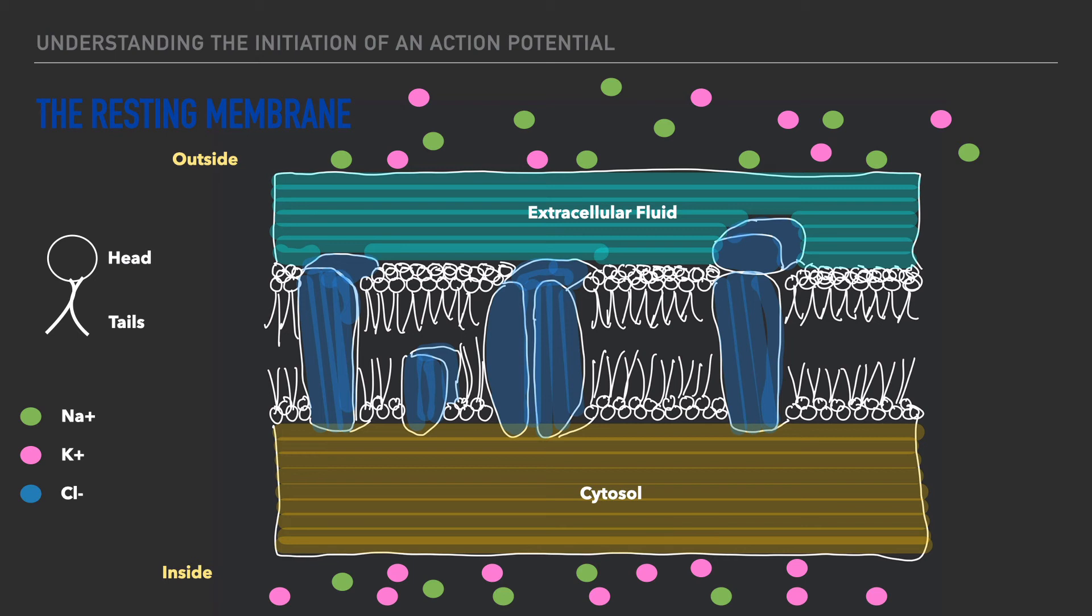And next there is more chloride on the inside of the cell than there is on the outside. So here's our chloride on the outside of the cell.